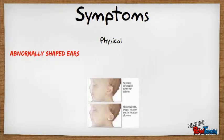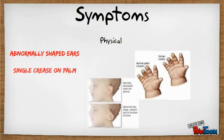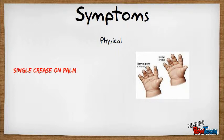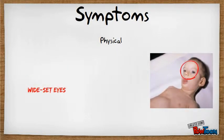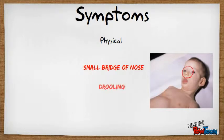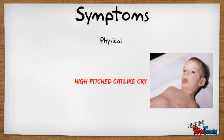Symptoms. The physical symptoms are abnormally shaped ears smaller than average, a single crease on the palm, wide-set eyes, small jaw, small chin, small nose bridge, drooling, organ protrusion, and the cat-like cry.